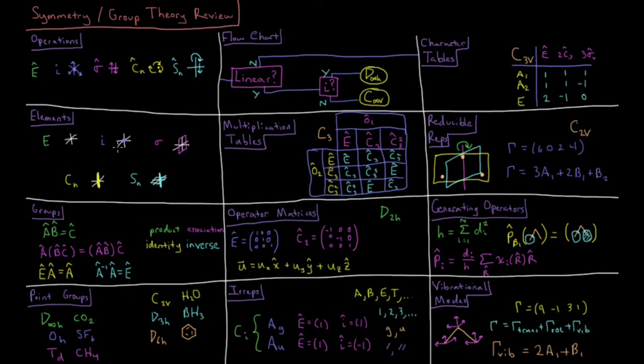So the symmetry elements of a molecule form a group called a point group. These point groups have names like D infinity H, OH, TD, C2V, D3H, D6H, names like this.